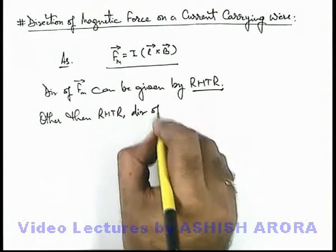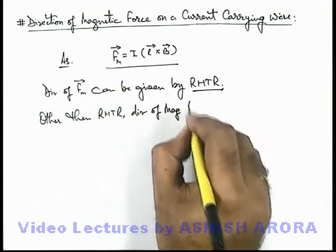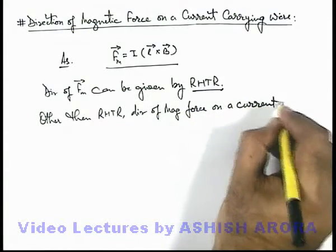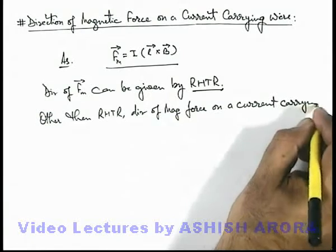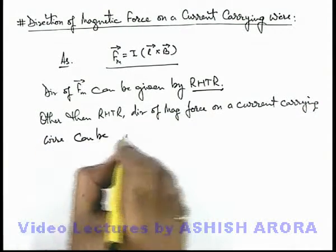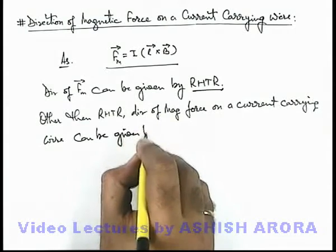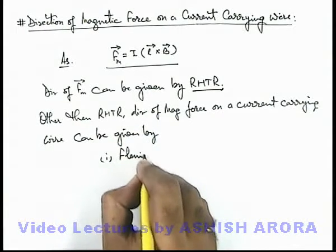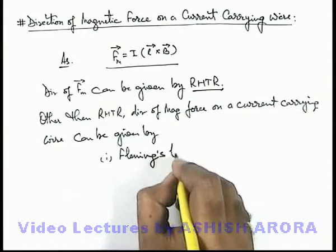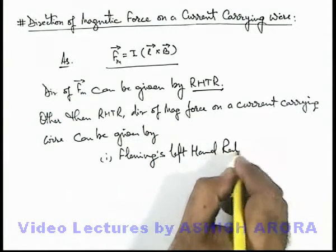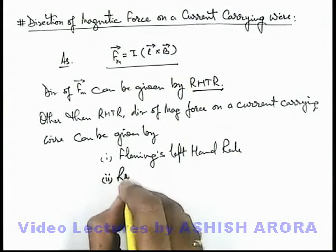direction of magnetic force on a current carrying wire can be given by one, Fleming's left hand rule, and the other one is right hand palm rule.